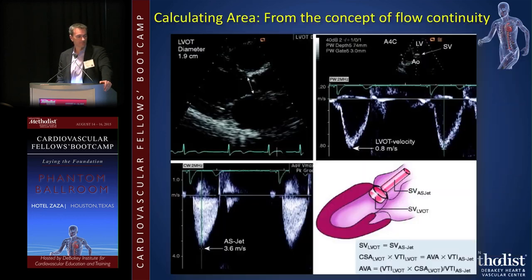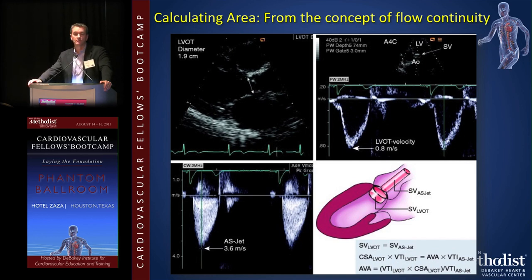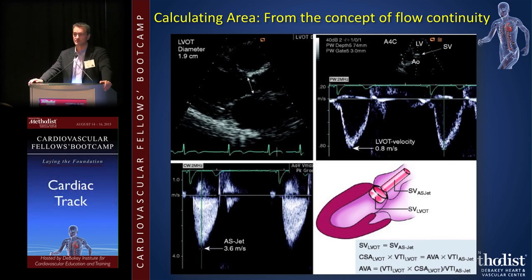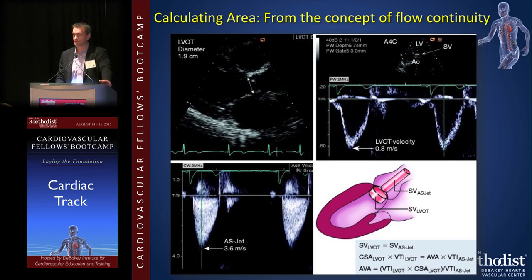Calculating area via the continuity equation: you have the LVOT diameter and LVOT time velocity integral, then use continuous wave Doppler across the stenosis. Pulse wave Doppler is range-specific — a small sample volume where you know exactly where the velocity is coming from. Continuous wave Doppler samples velocity anywhere along the path of the Doppler beam, assuming you know where the highest velocity is. Shooting from the apex across the aortic valve, the assumption is the highest velocity is across the aortic valve — the narrowest point. This gets complicated if there's sub-aortic stenosis in addition to aortic stenosis.